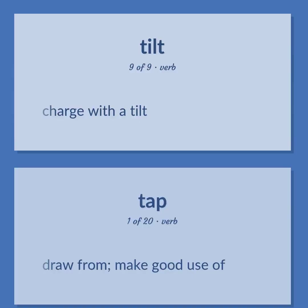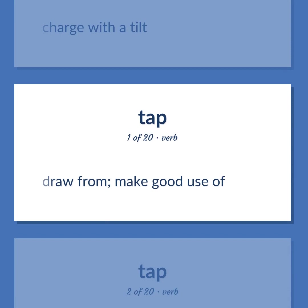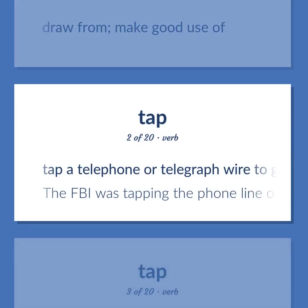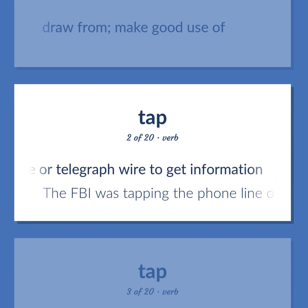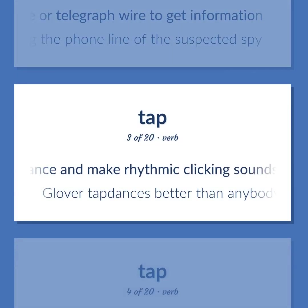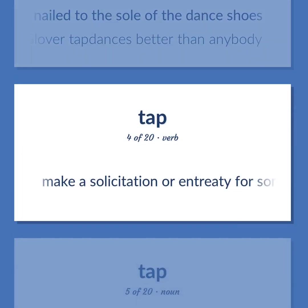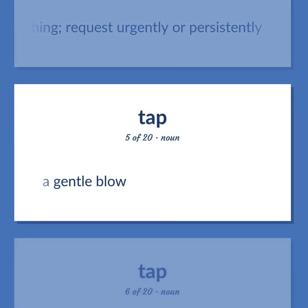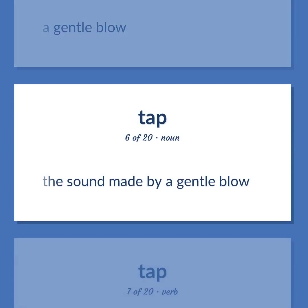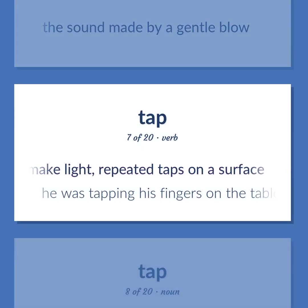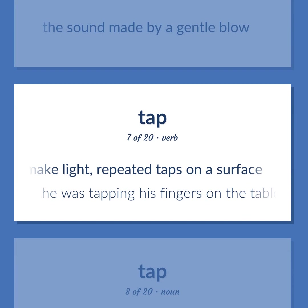TAP: Charge with a tilt. Draw from; make good use of. Tap a telephone or telegraph wire to get information — the FBI was tapping the phone line of the suspected spy. Dance and make rhythmic clicking sounds by means of metal plates nailed to the sole of the dance shoes — Glover tap dances better than anybody. Make a solicitation or entreaty for something; request urgently or persistently. A gentle blow. The sound made by a gentle blow. Make light, repeated taps on a surface — he was tapping his fingers on the table impatiently.